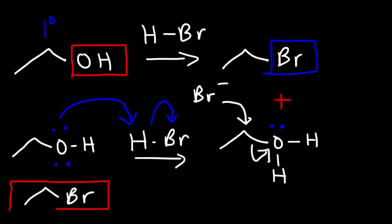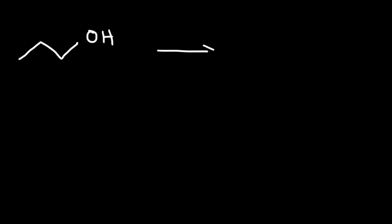Primary alcohols react very slowly with hydrochloric acid because chloride is a weaker nucleophile than bromide. However, this reaction can be enhanced if we use zinc chloride, which is a powerful Lewis acid — this is known as the Lucas reagent.